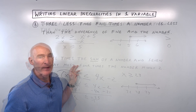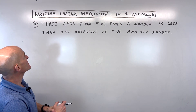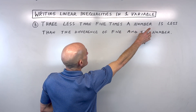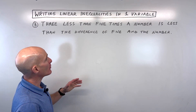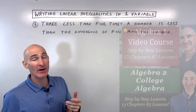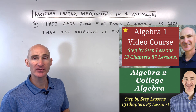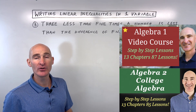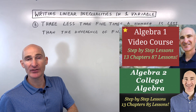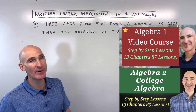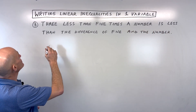Let's take a look at one last example — see if you can do this on your own. It says: three less than five times a number is less than the difference of five and the number. There's a lot going on there, so think about it. Also, I want to make you aware of my Algebra 1 and Algebra 2/College Algebra video courses for sale, which walk you through those courses step by step. But let's go to this problem.